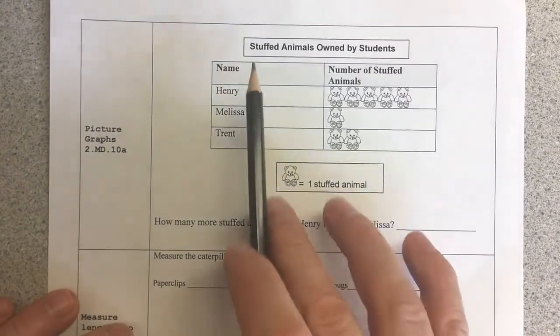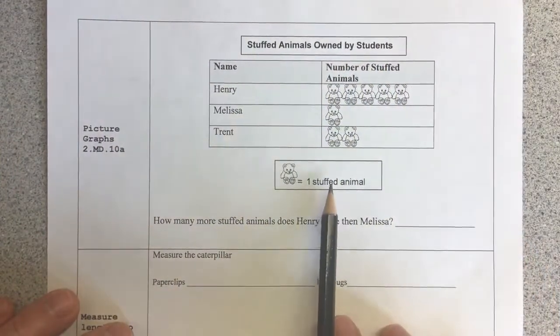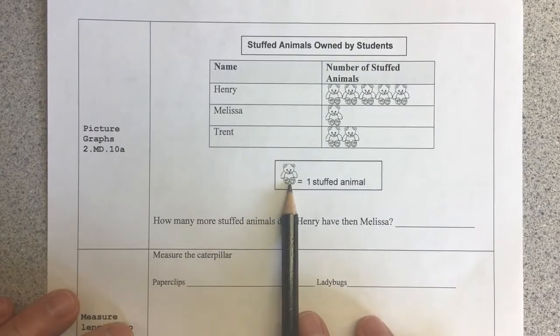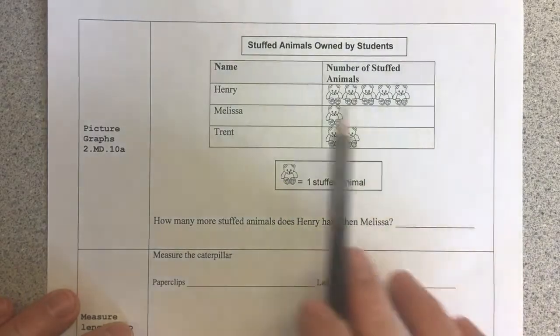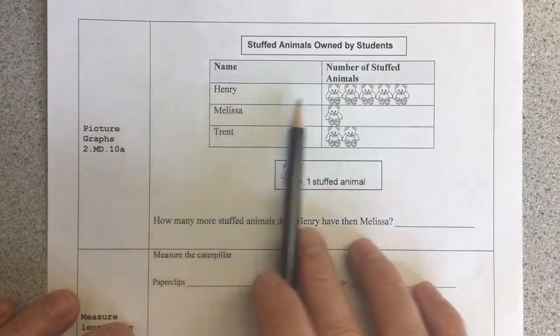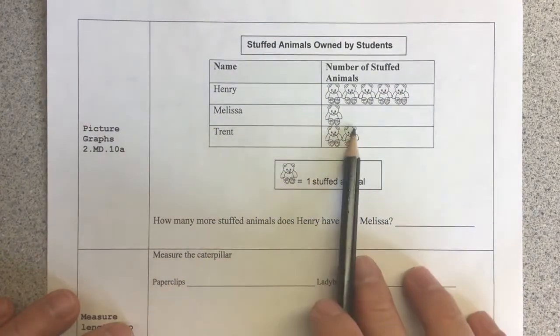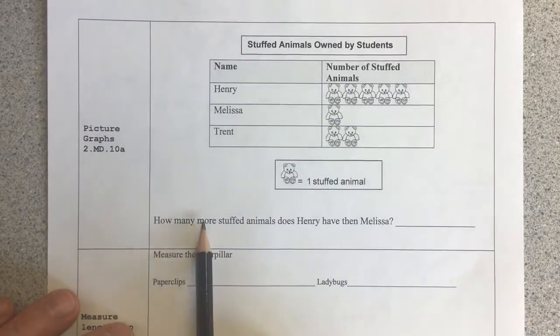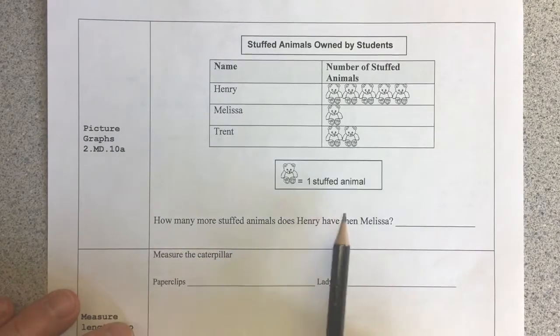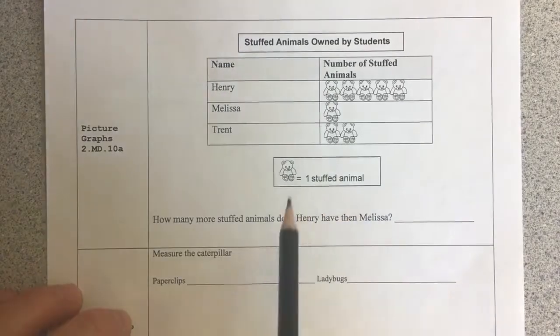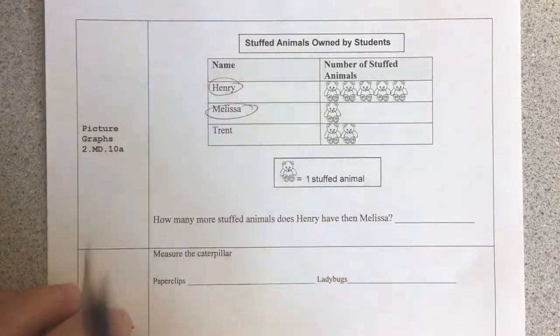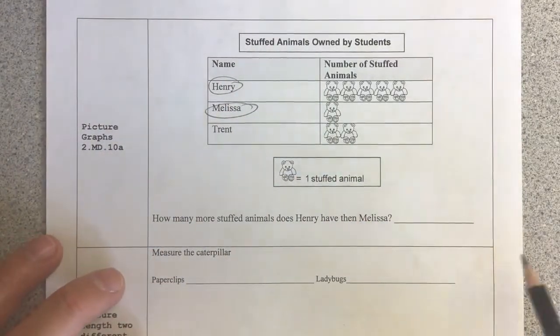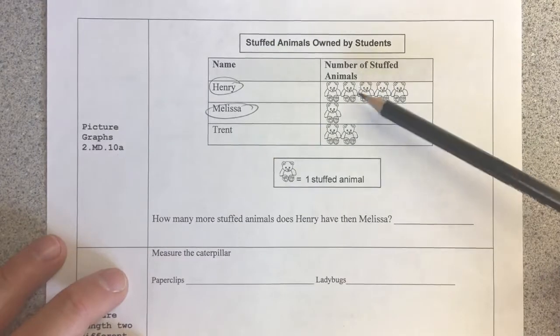Picture graphs. Stuffed animals owned by students. The first thing I do is I look at my key. 1 teddy bear equals 1 stuffed animal. So it's giving me data for Henry, Melissa, and Trent. And then I need to look at my question. How many more stuffed animals does Henry have than Melissa? So I'm looking at Henry and Melissa. Those are the two I'm looking at.